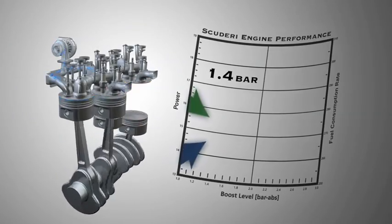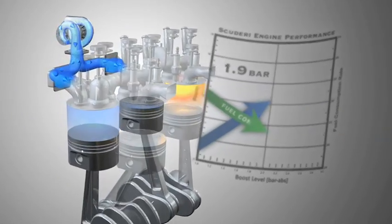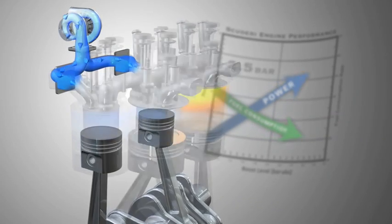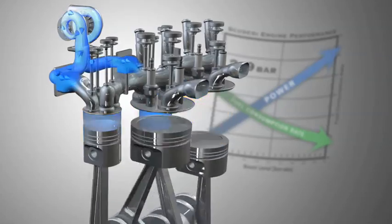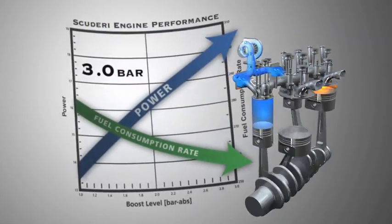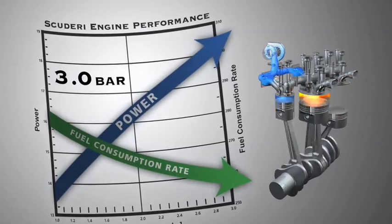We accomplish this by turbocharging the compression side of the engine and literally downsizing the cylinder. The net effect is an engine with higher power, higher torque, and much higher efficiency.